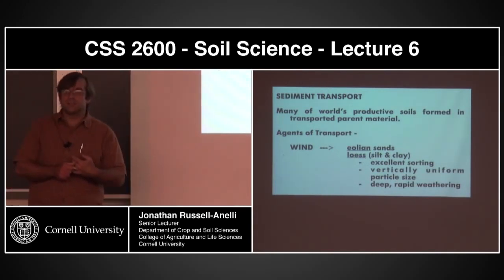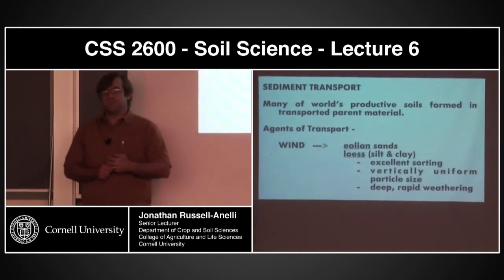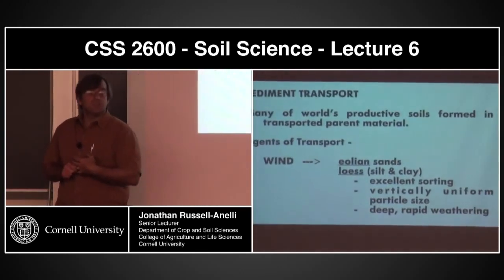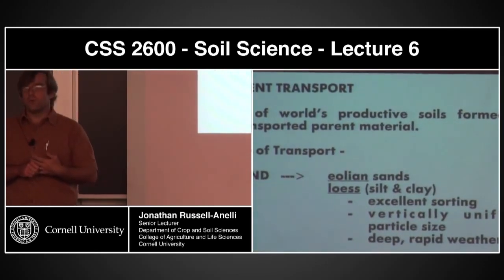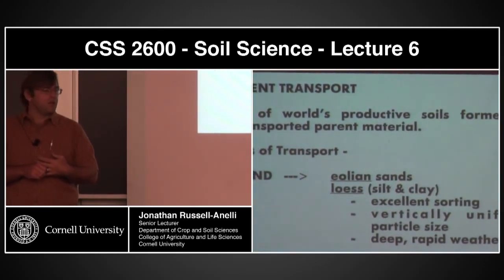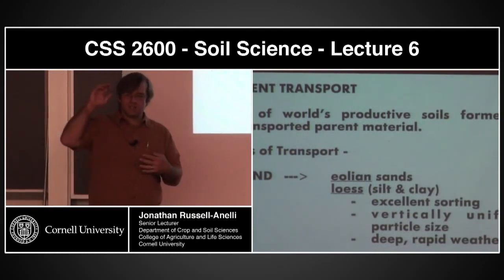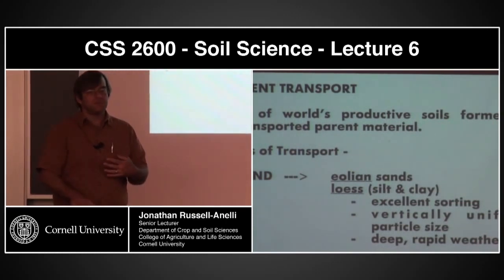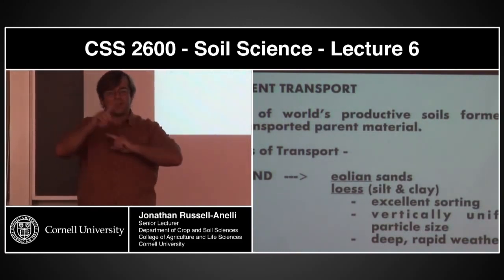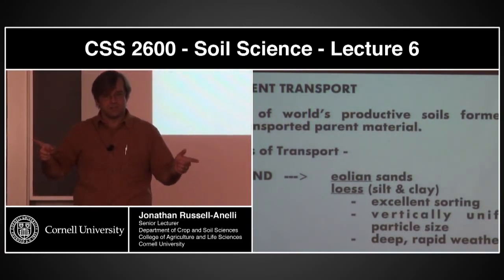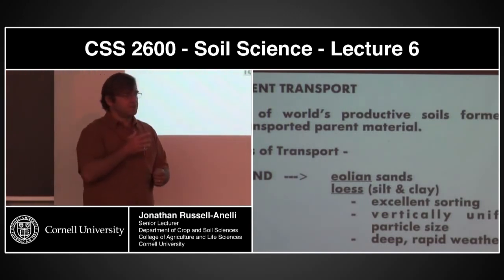There are a number of different agents of transportation. The first one we'll talk about is wind. I've introduced you to this because I've talked about loess — that very first soil pit we went to. In a periglacial environment, the glaciers recede enough that lake levels drop. We have a cold body up there and a warm body down there, creating lots of convection currents and lots of wind. That wind selectively picks up the silt and redeposits it.